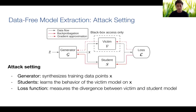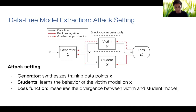Here is the ad hoc setting. We want to steal a victim model by copying its behavior through a student model — we want the student to produce the same predictions as the victim on any input data x. We encode this into a loss function that measures the disagreement between the victim and student model, and the student is trained by minimizing this loss. Since we don't have any data x, we use a generator which is trained by maximizing the disagreement between the victim and student. The rationale is that data on which the victim and student disagree will bring more information to the student.